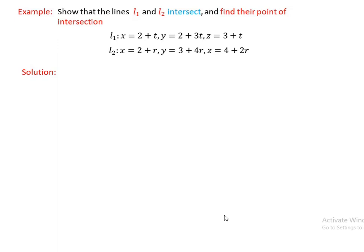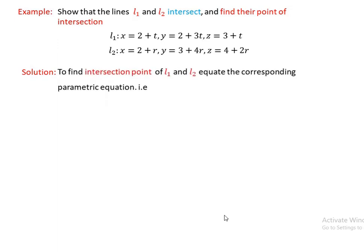To find the intersection point, we equate the corresponding parametric equations of L1 and L2: 2 plus t equals 2 plus r, 2 plus 3t equals 3 plus 4r, and 3 plus t equals 4 plus 2r.